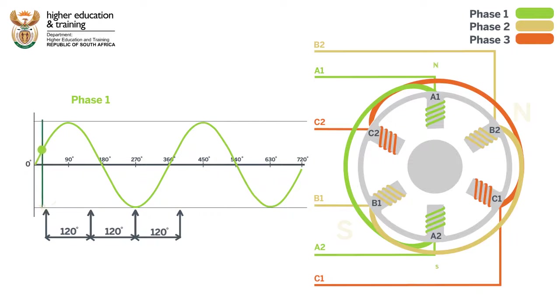If we add a second phase, we can see that magnetic poles form on B1 and B2 in the same way as they form on A1 and A2.